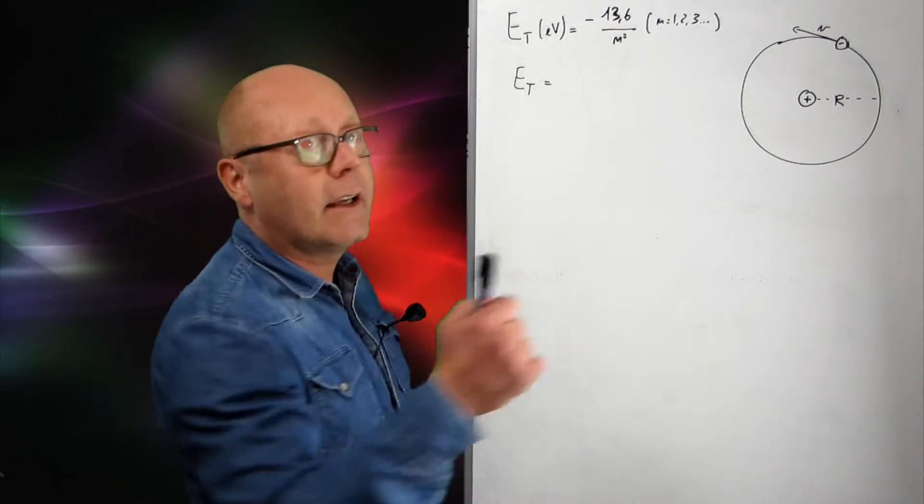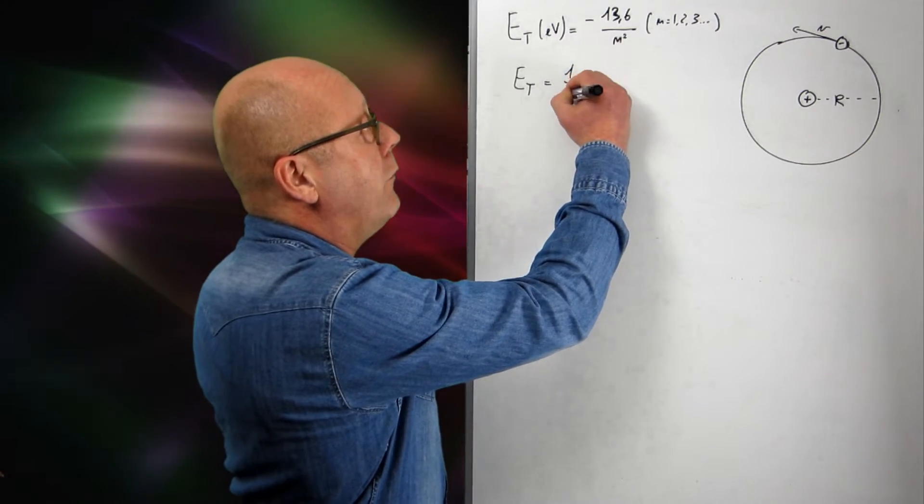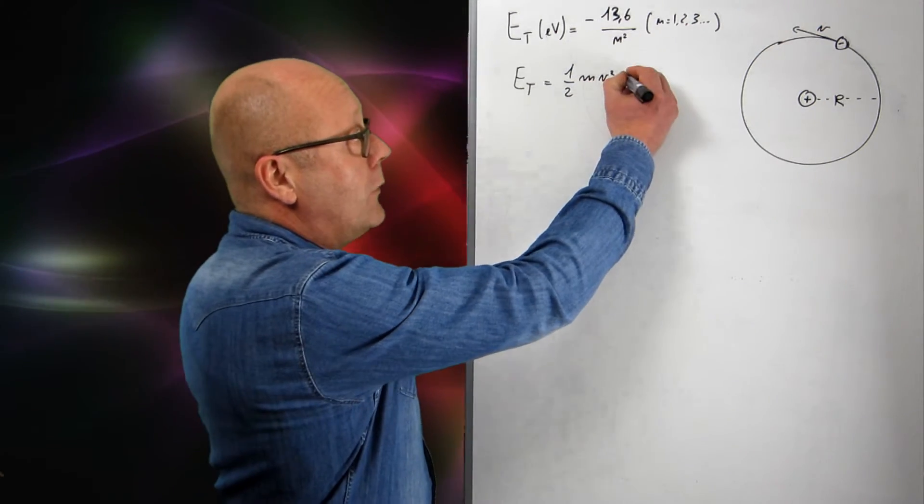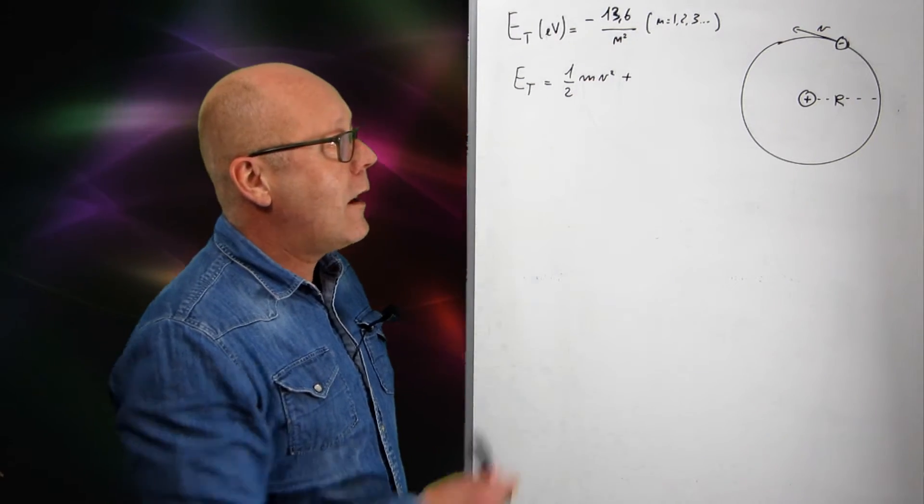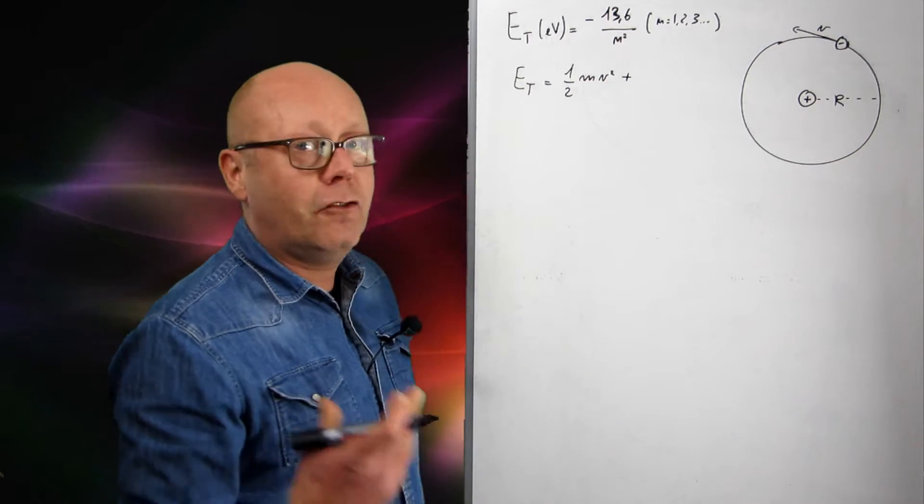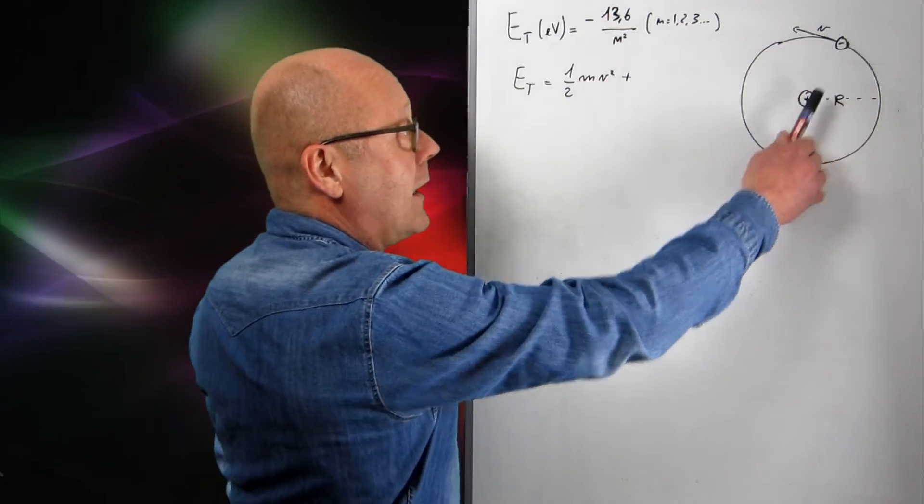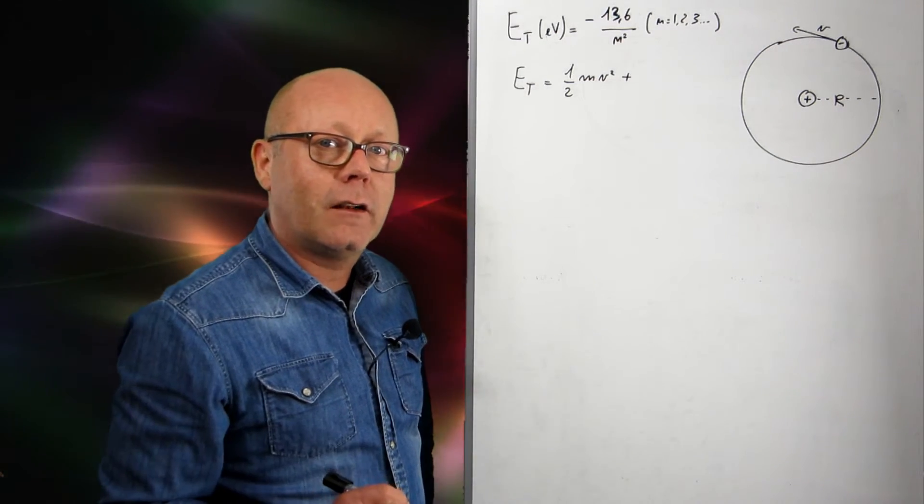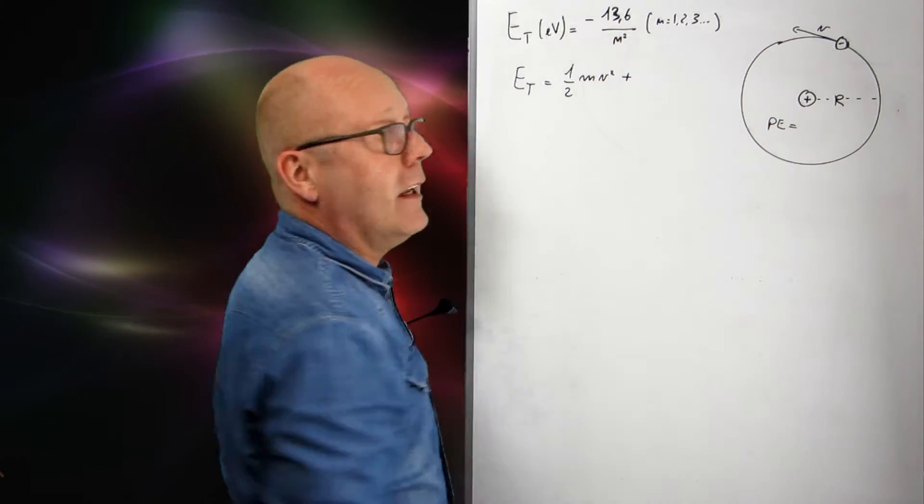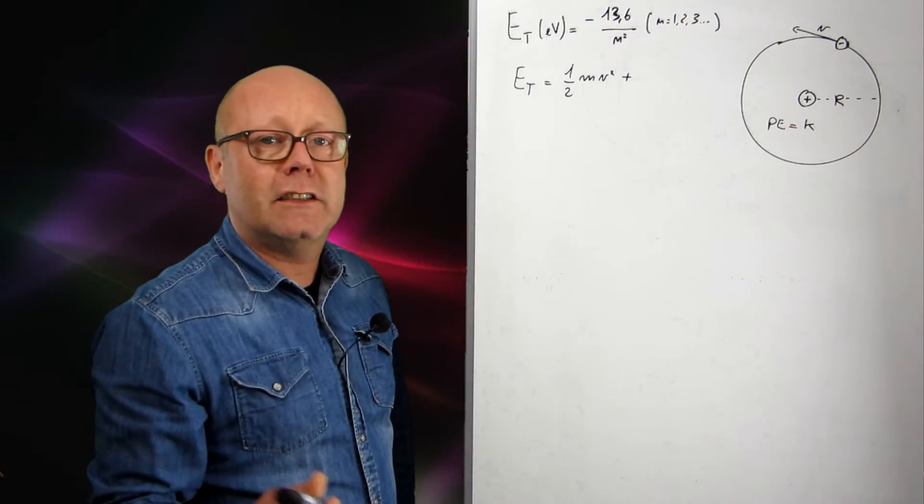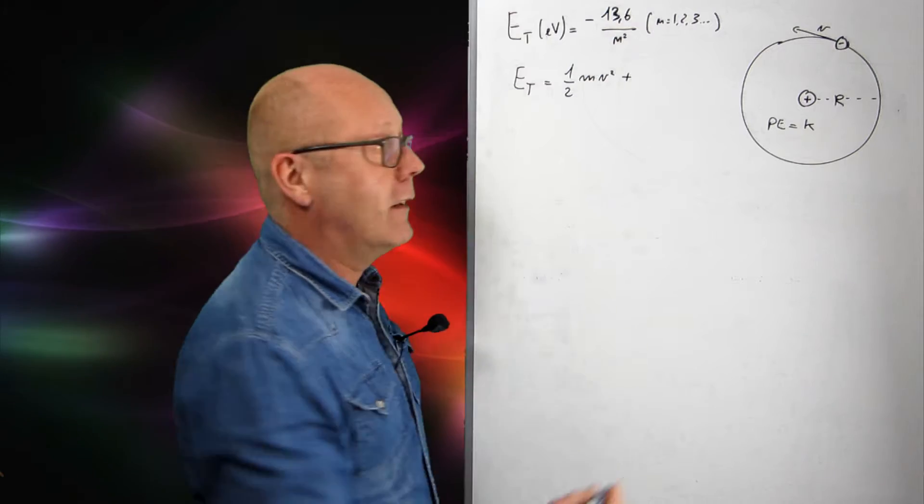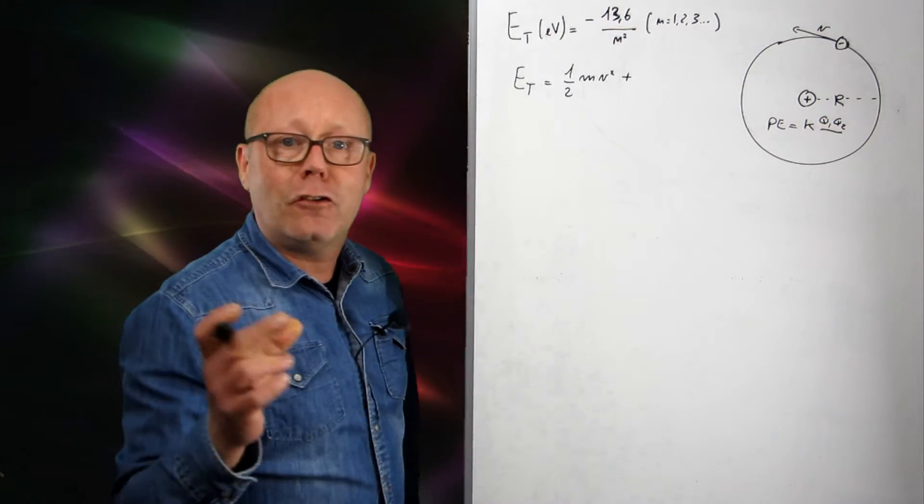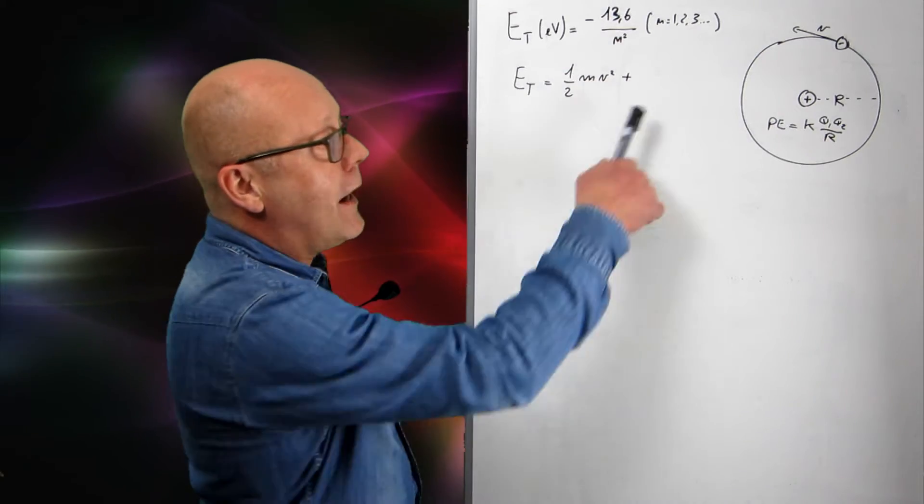The energy of the electron will be its kinetic energy and its potential energy. So the kinetic energy is one-half m v squared, where m is the mass of the electron and v its speed. But you have to add to this the potential energy. Now, what is the potential energy of the electron? Well, it's got an electric origin, because it is in an electric field due to the positive charge. So what is the potential energy of a charge within an electric field? The potential energy of a charge within an electric field is proportional to the product of the charges.